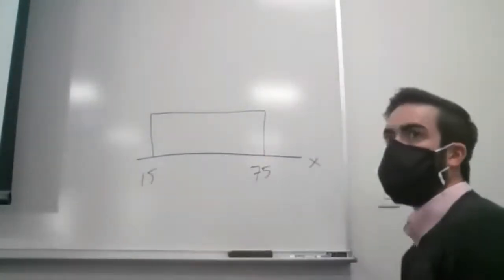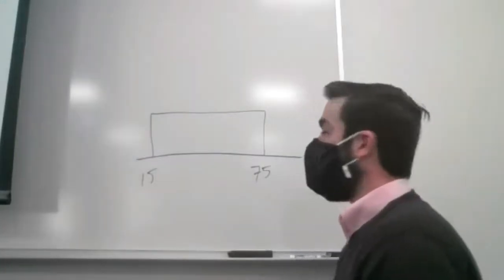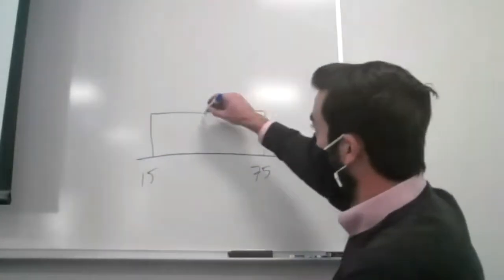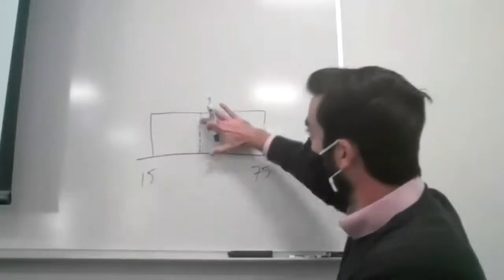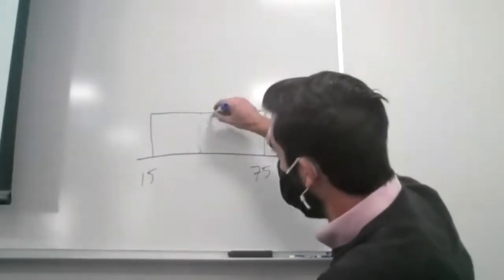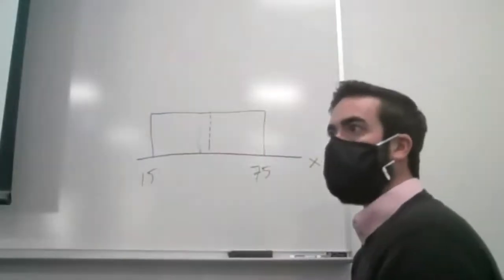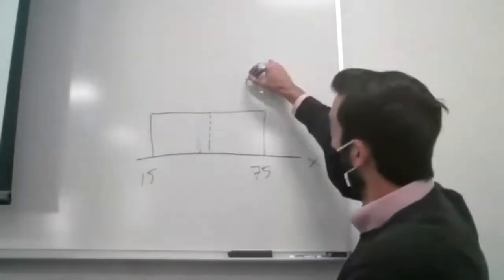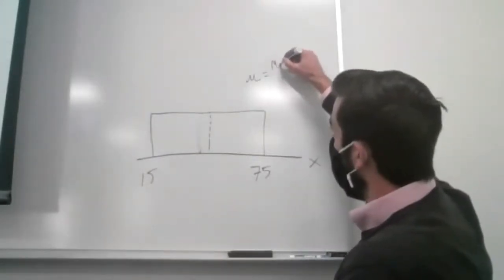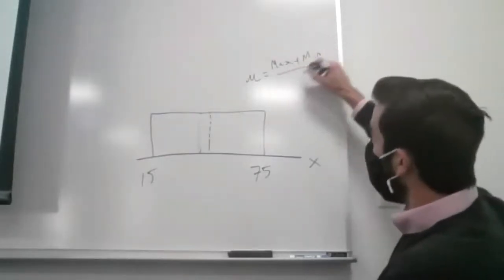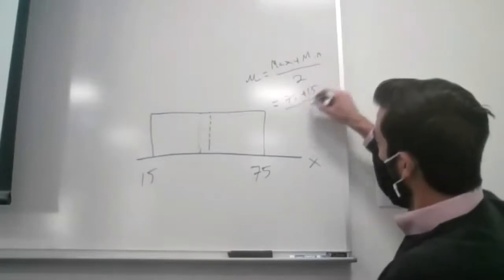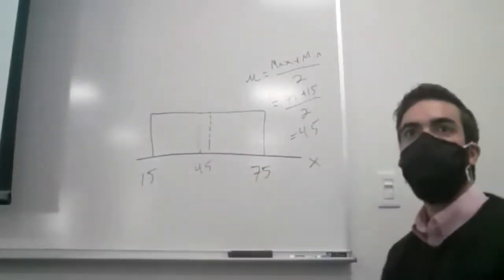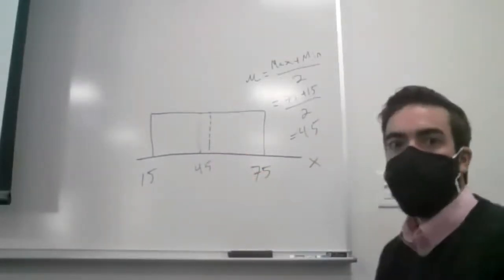The first question is asking me for the mean and variance of this variable. If we want the mean, since everything is equally weighted in the uniform distribution, we're really just looking for the middle number — perfectly in the middle between these two values. To find the middle of two values, we simply take the average: add up the maximum and minimum and divide by 2. So 75 plus 15 divided by 2 gives us a mean of 45.